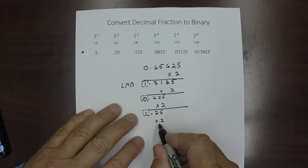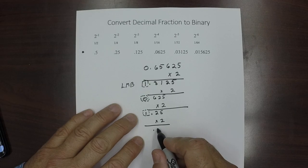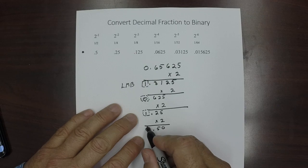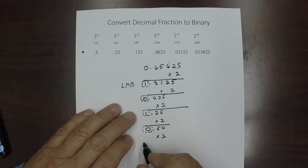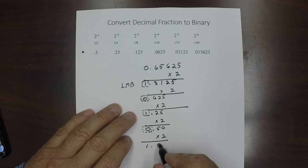We're going to multiply this number times 2. Turns out to be 0.5. There's a 0 right here. That's our next bit in line. And finally we're going to multiply this times 2, and that turns out to be 1.0.